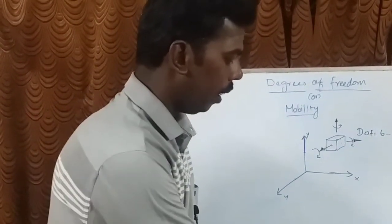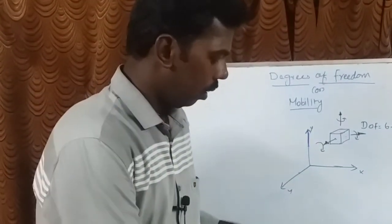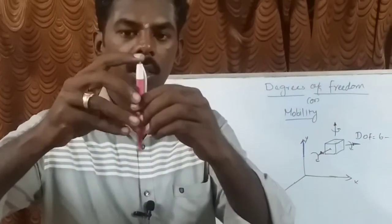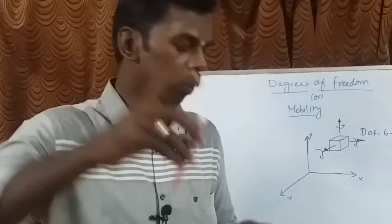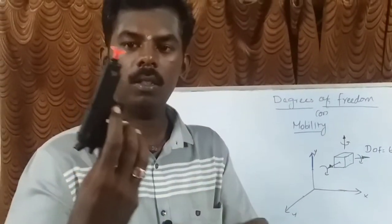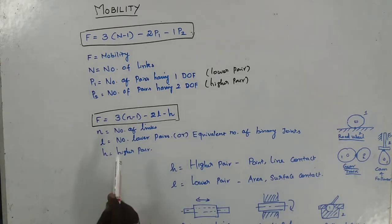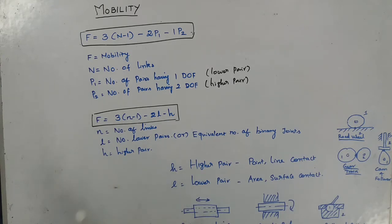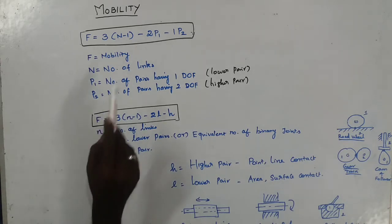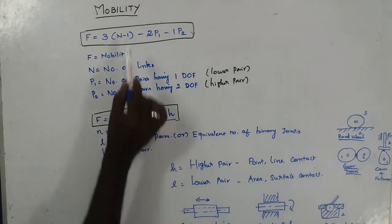Similarly, holding devices require a single input, pressing pen mechanisms require a single input, and a toy revolver requires a single input. Mobility of a mechanism is defined as the number of inputs required to produce constrained motion of the mechanism. Both formulas shown are the same — only the notation changes.